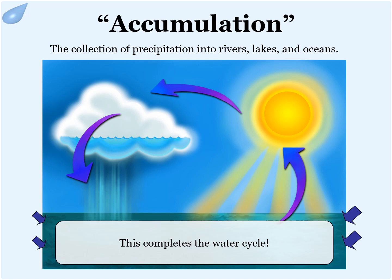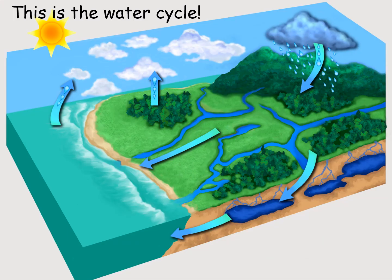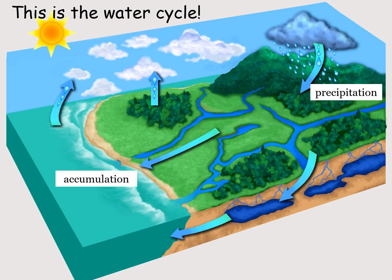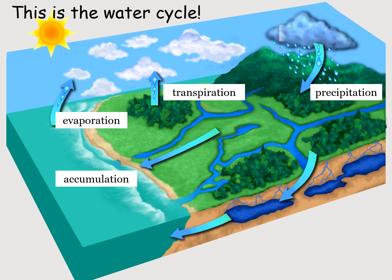This completes the water cycle. Let's review the water cycle: precipitation, transpiration, evaporation, condensation, and accumulation.